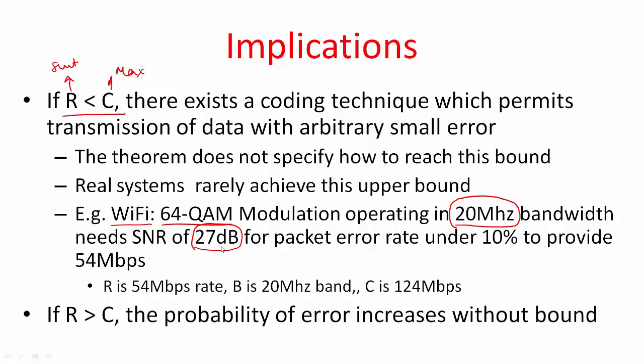It operates over a link bandwidth of 20 MHz and needs about 27 dB S/N. If I were to plug in this 20 MHz link bandwidth and signal to noise ratio corresponding to 27 dB, Shannon theorem tells me that I can achieve 124 Mbps. But what did this particular modulation achieve? A mere 54 Mbps.